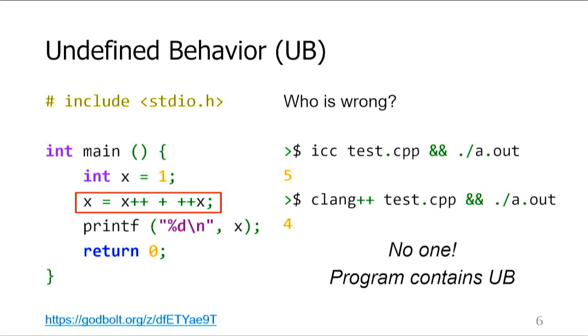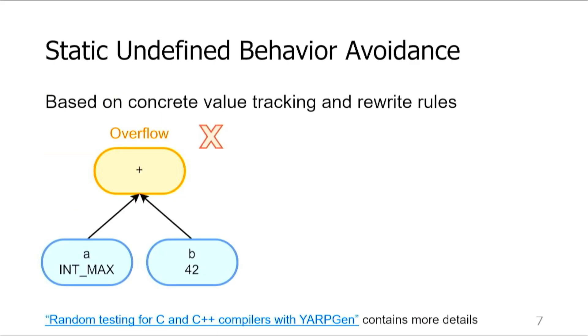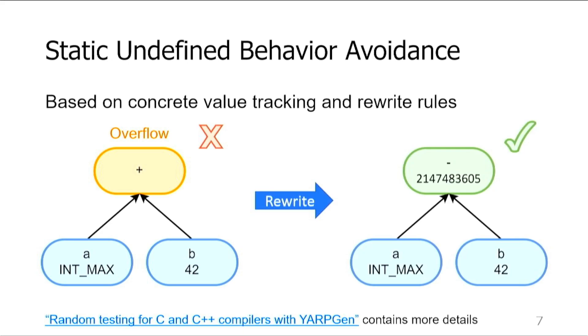To avoid this, we developed an undefined behavior elimination mechanism. It is entirely static and happens during the generation process. We do not use any dynamic checks during the test execution, also known as wrapper functions. As a starting point, we used scalar undefined behavior avoidance mechanism that we presented at OOPSLA 2020. Here is a brief overview of how it works. We used concrete value tracking and a simple interpreter to compute the results of operations and report undefined behavior. If we detect it, we replace a fault operation with a safe one. For example, in this case, we replaced addition, which caused signed overflow, with a subtraction.